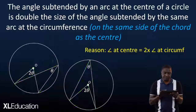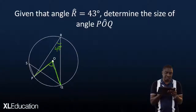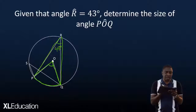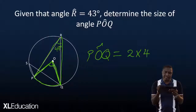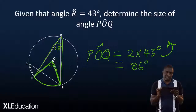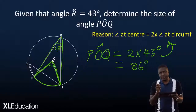Let's apply this theorem. Given that angle R is 43 degrees, determine the size of angle POQ. This arc subtends the angle of 43 degrees at the circumference. The same arc subtends angle POQ at the center. So angle POQ equals 2 times 43, which gives us 86 degrees. The reason is: angle at the center equals 2 times angle at the circumference.